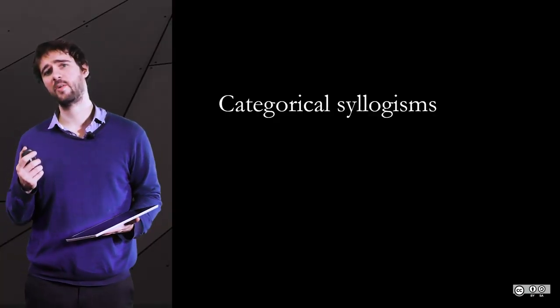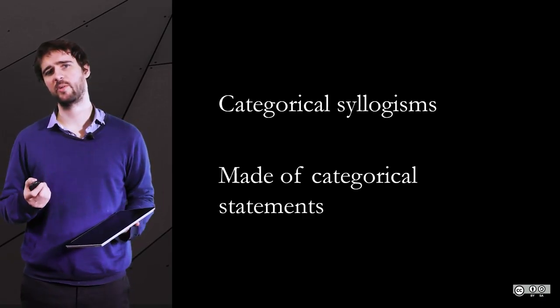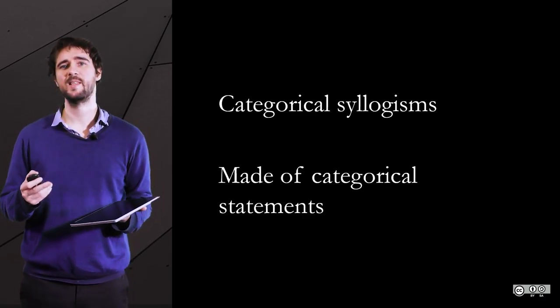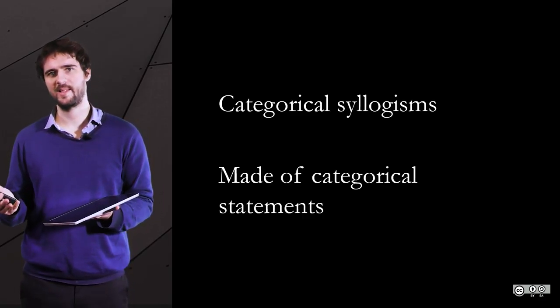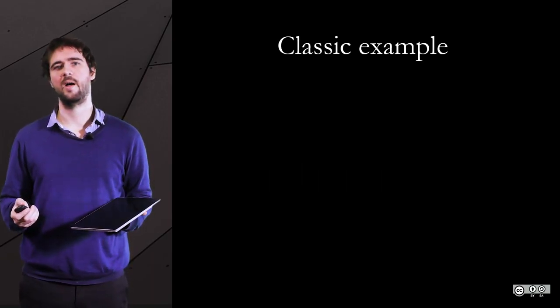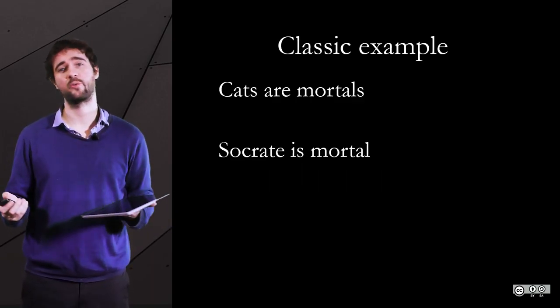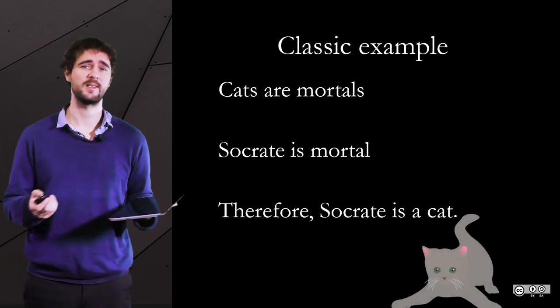Categorical syllogisms are called that way because they are made of categorical statements. It means a statement that relates two types of categories of things. The classic, thousands years old example is cats are mortal, Socrates is mortal, therefore Socrates is a cat.